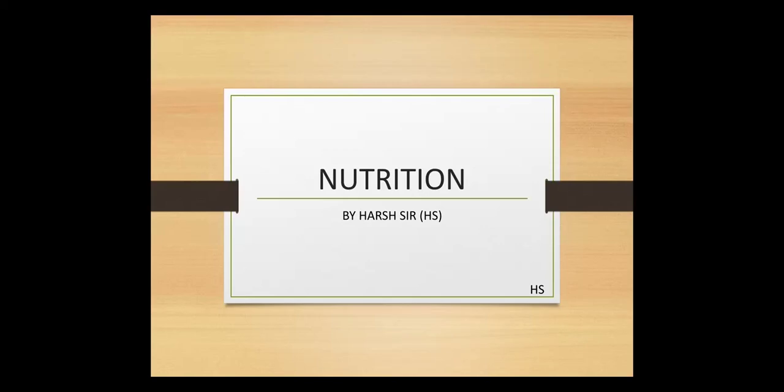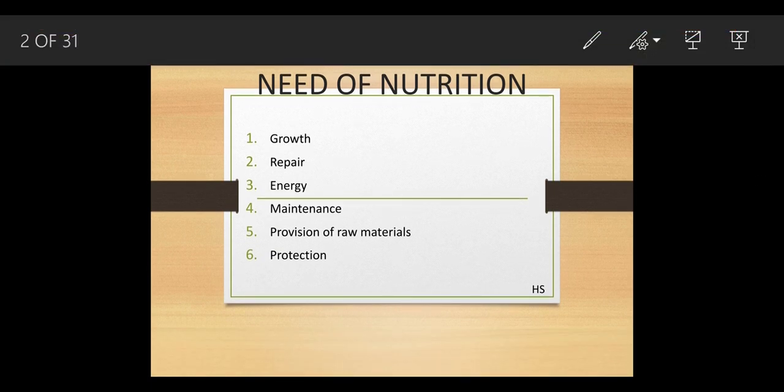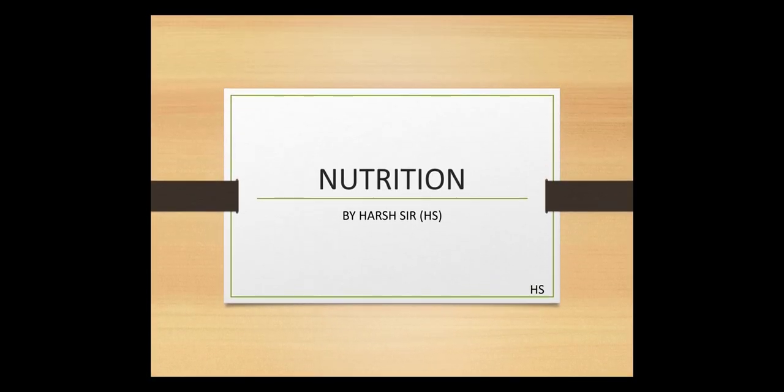Today we are going to start with a new chapter in biology: nutrition. Nutrition is a very interesting chapter. The definition of nutrition is the supply of essential organic and inorganic chemical compounds to the body. This means proper amounts of nutrients like proteins, vitamins, and carbohydrates, which are essential for the human body. By consuming a proper diet in proper quantity, we can stay healthy.